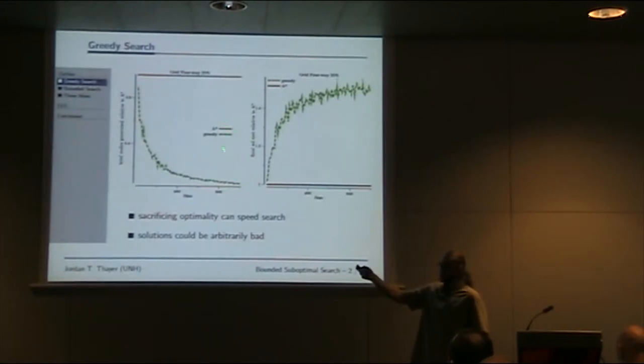A-star search is an optimal search algorithm. Greedy search is as relaxed as you can get in terms of solving a problem suboptimally. What we see here on the left, on the x-axis we have problem size, on the y-axis we have the effort required relative to A-star. A-star always takes the effort A-star takes. As problem size increases, greedy search takes less and less time relative to A-star.